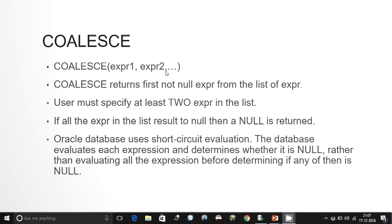A user must pass at least two expressions to the COALESCE function — fewer than that would raise an error. Oracle Database uses short-circuit evaluation: instead of checking all the expressions and then finding out which one is null, Oracle Database evaluates each expression one by one to determine whether it is null, which can be understood with an if-else statement.